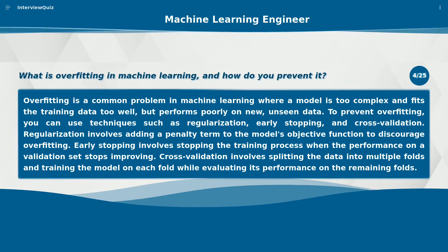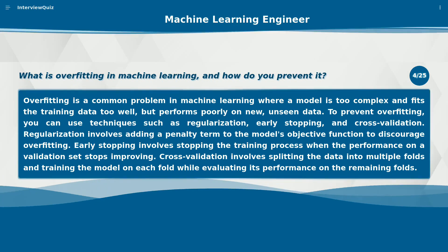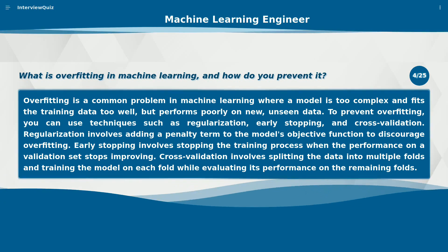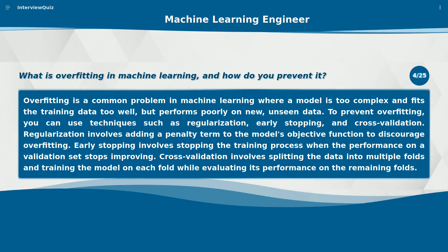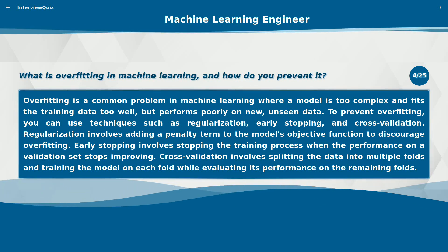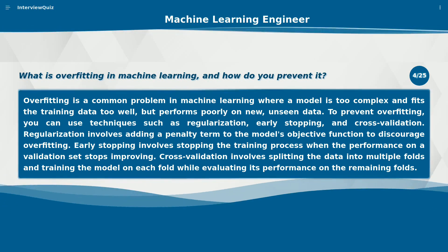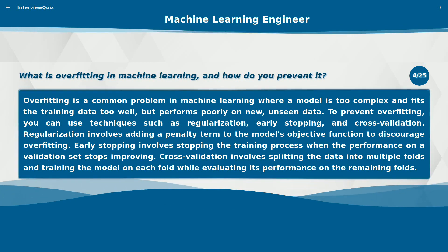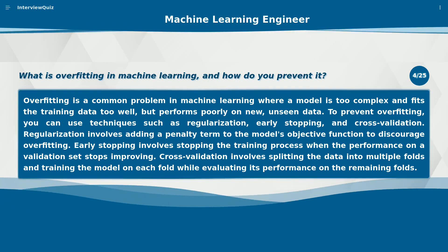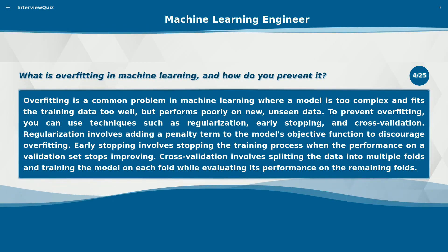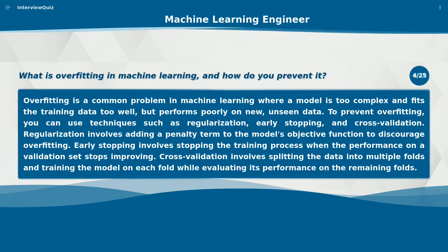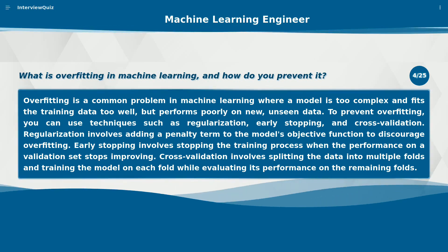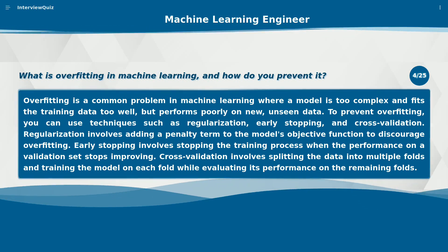What is overfitting in machine learning and how do you prevent it? Overfitting is a common problem in machine learning where a model is too complex and fits the training data too well, but performs poorly on new, unseen data. To prevent overfitting, you can use techniques such as regularization, early stopping, and cross-validation.